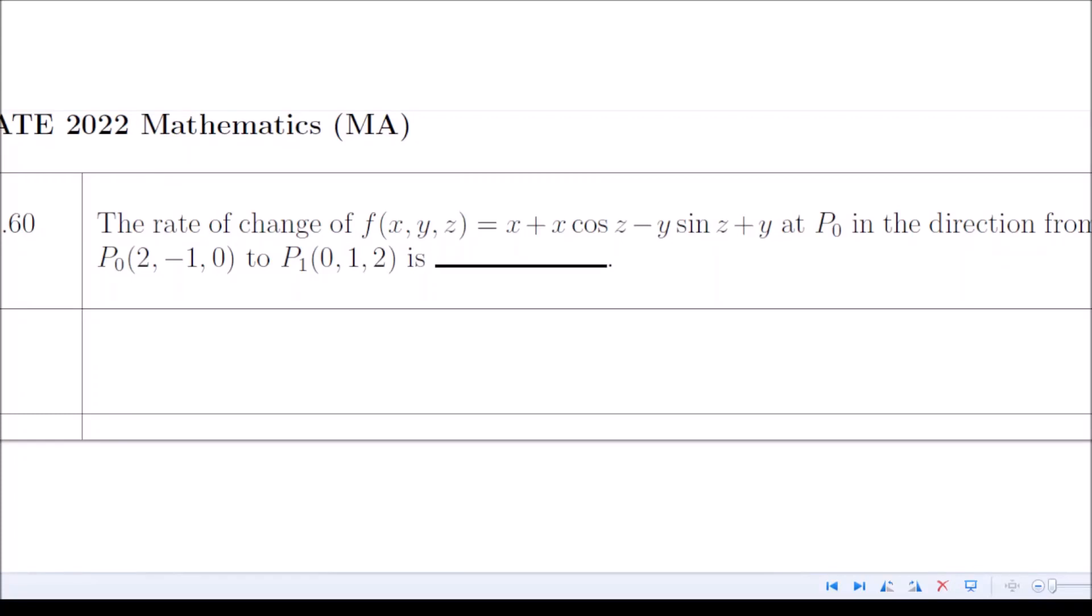Everyone, so today I'm going to discuss with you the solution to this question. This question came in the GATE examination of 2022. Here we have to find the rate of change—rate of change means the derivative—of a function. The function is in three variables x, y, z, so obviously the derivative means either the partial derivatives or the directional derivatives.